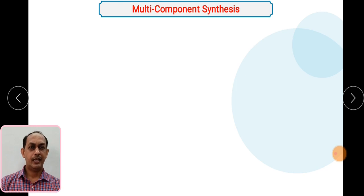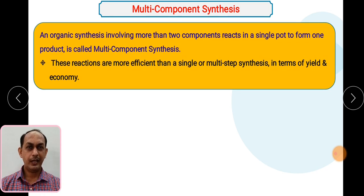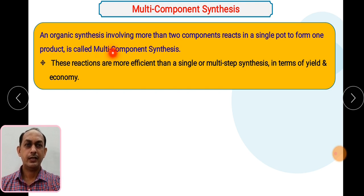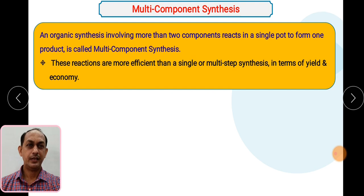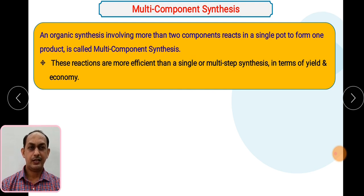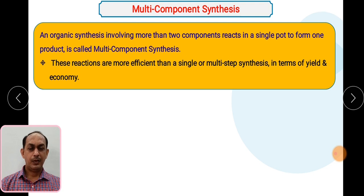Now we will see multi-component synthesis. Multi means many; multi-component synthesis involves two or more components reacting together in a single pot or single vessel to form a single product. Multi-component reactions are more efficient than single-step or multi-step linear synthesis in terms of yield and economy, because in a single vessel we obtain the desired product, reducing unit operations such as filtration and heating.